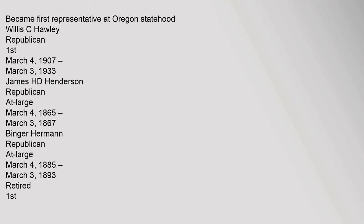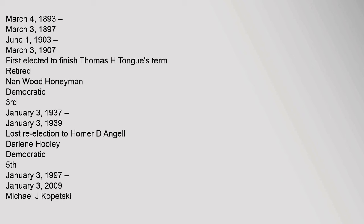Willis C. Hawley, Republican, 1st, March 4, 1907 to March 3, 1933. James H. D. Henderson, Republican, at large, March 4, 1865 to March 3, 1867. Binger Herman, Republican, at large, March 4, 1885 to March 3, 1893, retired; 1st, March 4, 1893 to March 3, 1897; June 1, 1903 to March 3, 1907, first elected to finish Thomas H. Tongue's term, retired. Nan Wood Honeyman, Democratic, 3rd, January 3, 1937 to January 3, 1939, lost re-election to Homer D. Angel. Darlene Hooley, Democratic, 5th, January 3, 1997 to January 3, 2009.